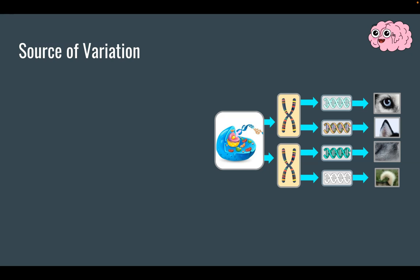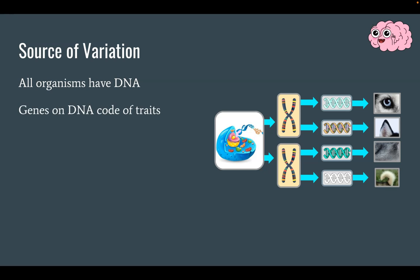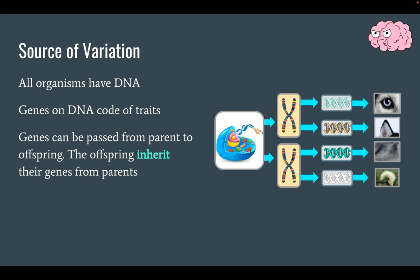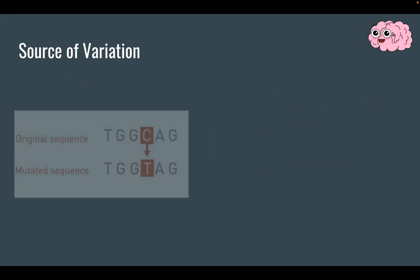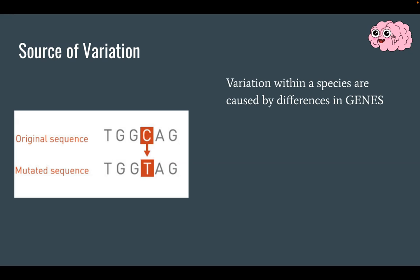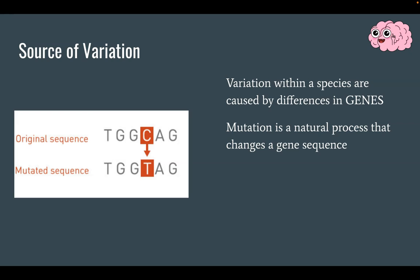Now, what is the source of variation? It's important to remember that all organisms have DNA, and that genes are on DNA, and genes code for traits. Perhaps the most important piece of information is that genes can be passed from parent to offspring — another way to say that is that offspring inherit their genes from their parents. Variations of a species are caused by differences in genes, and mutations change genes. Because mutations change genes, mutations can also change traits.